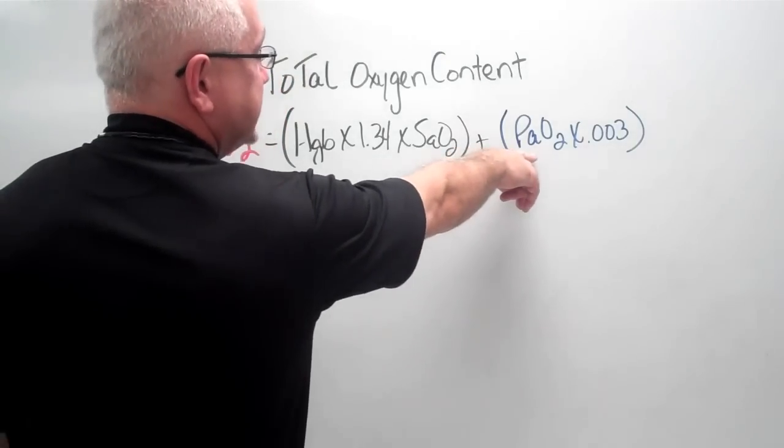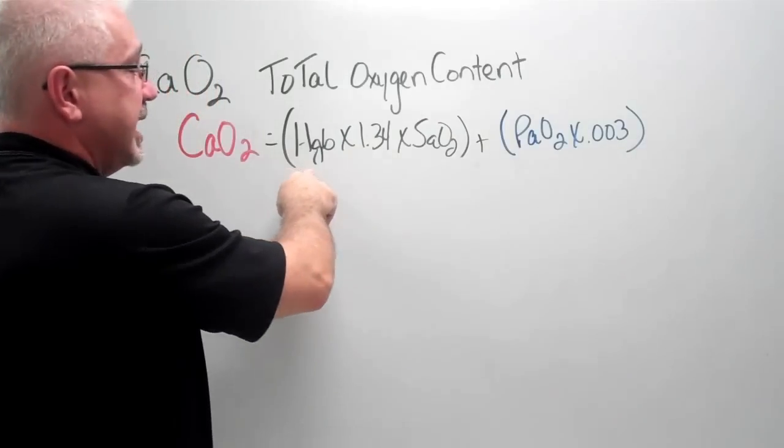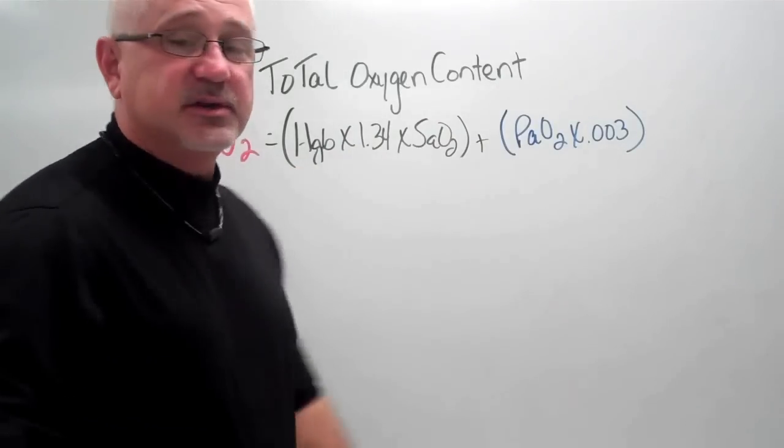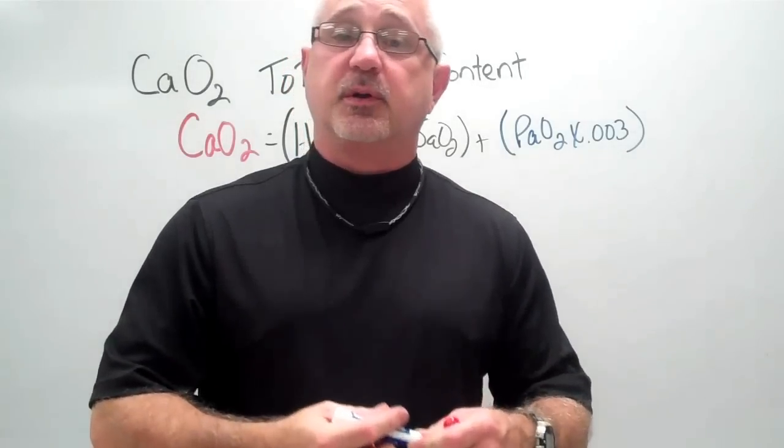We would need to get an ABG and a CBC to get the PaO2 and the hemoglobin count and the saturation. So we do need to have some lab work done to be able to get this CaO2 or total O2 content.